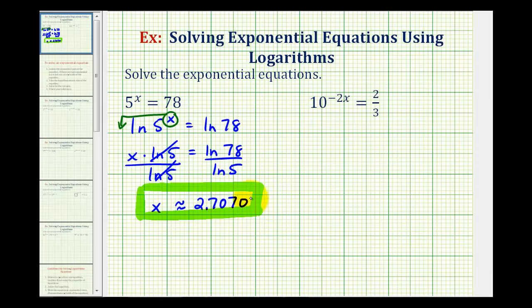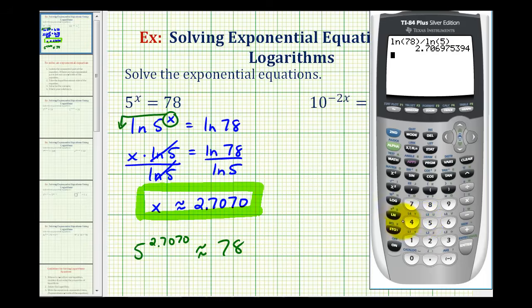And we should check our solution, so if x is approximately 2.7070, that means 5 raised to the power of 2.7070 should be approximately equal to 78. So let's go ahead and check this. Notice how it is almost 78. It's a little bit larger than 78 because we did round up, but this does verify our solution.